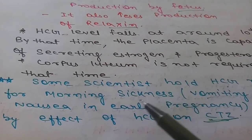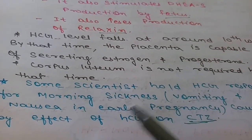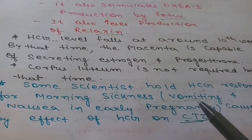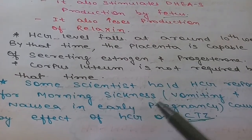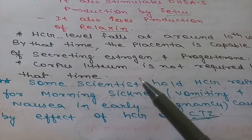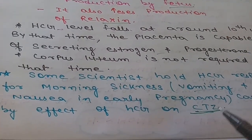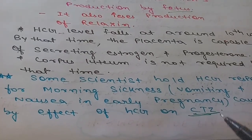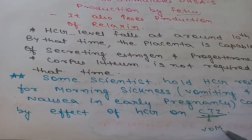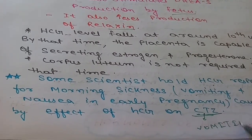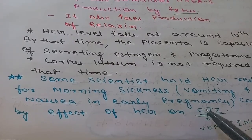One more important point about HCG is morning sickness. Some scientists believe that morning sickness in pregnant females is due to the action of HCG. Morning sickness refers to vomiting and nausea in early pregnancy. The basic mechanism is that HCG has a direct effect on the chemoreceptor trigger zone, which is responsible for vomiting, as this region is outside the blood-brain barrier.